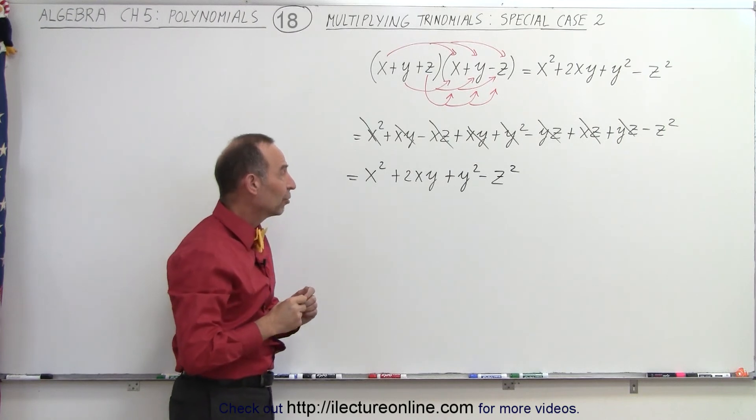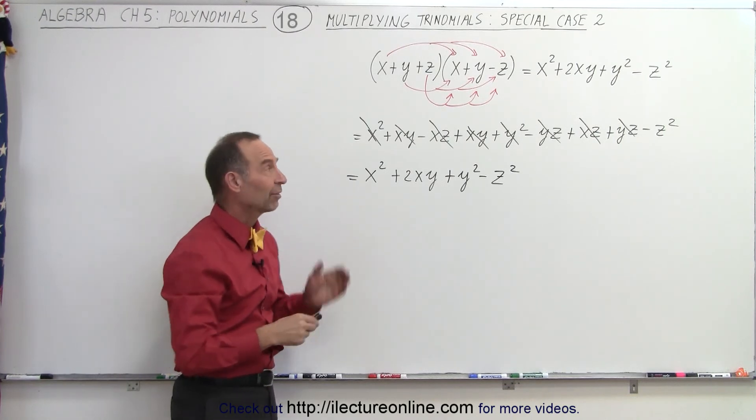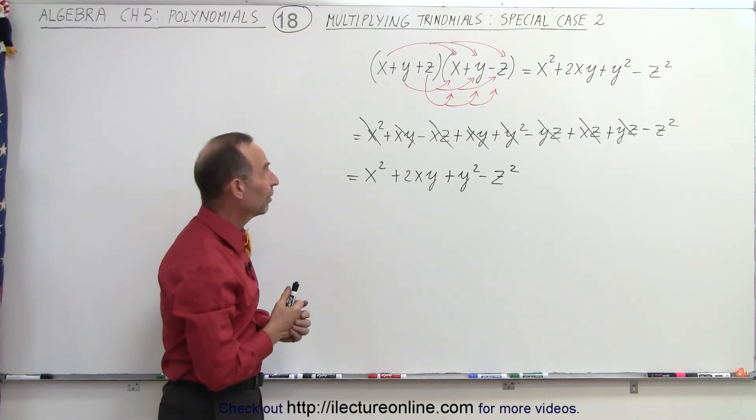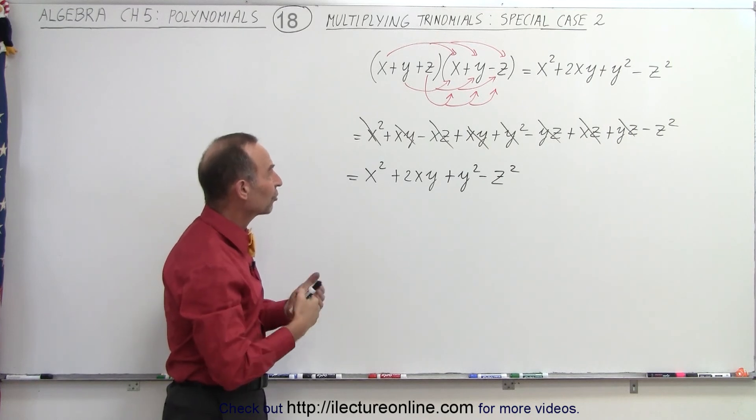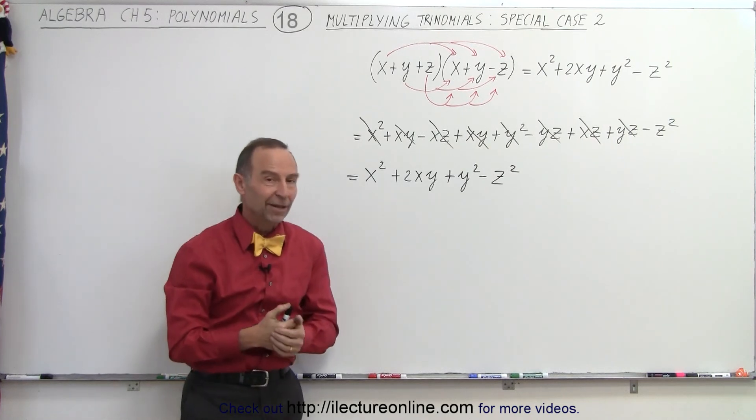The nine terms collapse down to simply four terms, and that's the final solution to that particular trinomial times a trinomial. And that is how it's done.